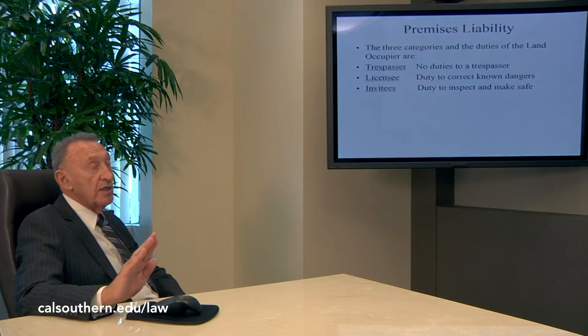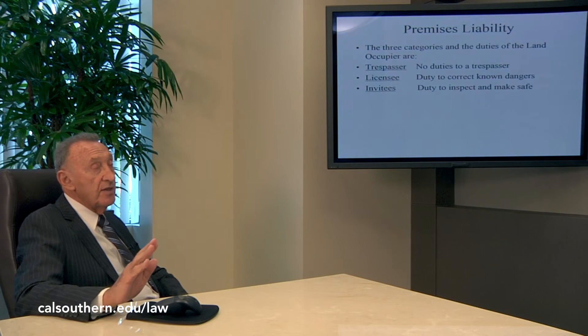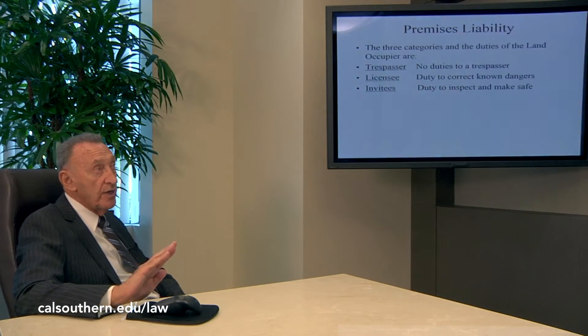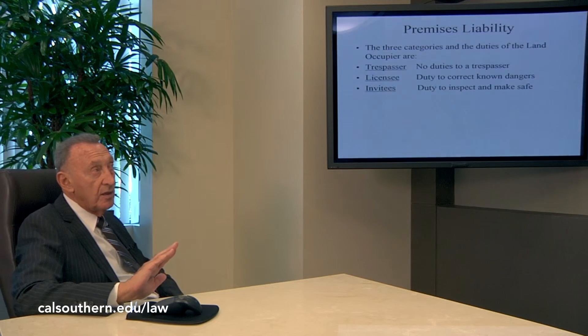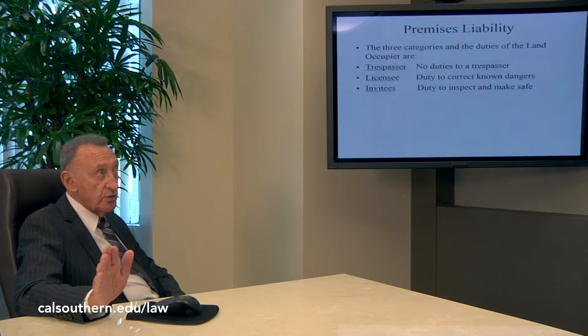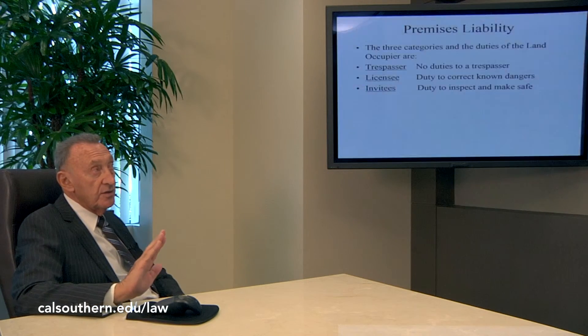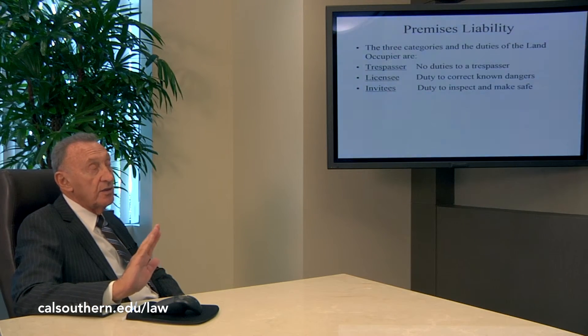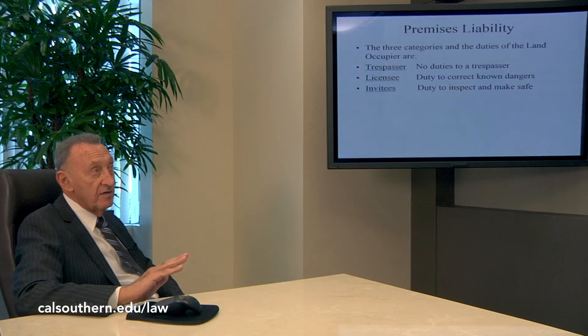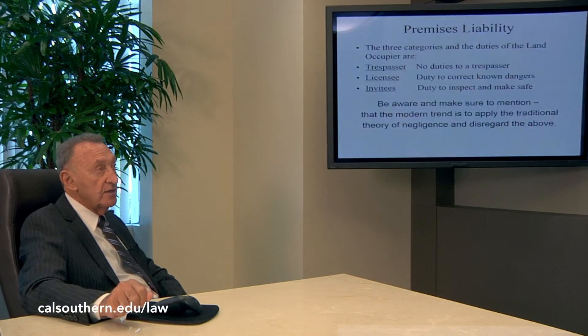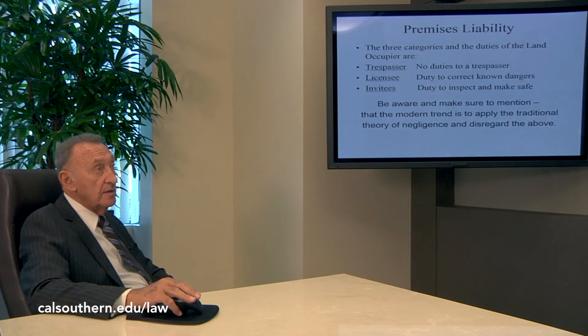Learn these categories, learn the duties — they are most important. There is a change that some jurisdictions are going to, but until they are all established with this change, we will consider the duties of the land occupier to the trespasser, the licensee, and the invitee. Be aware and make sure to mention that the modern trend is to apply the traditional theory of negligence and disregard the above. But until then, remember what we have just discussed about premises liability.